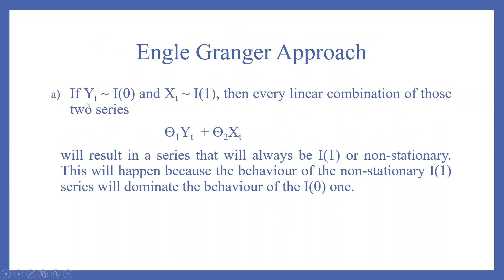The first one, if YT is integrated of the order 0, that is a base, and XT is integrated of the order 1, then every linear combination of those two series, that is theta 1YT plus theta 2XT, will result in a series that will be always I1 or non-stationary. This will happen because the behavior of the non-stationary I1 series will dominate the behavior of the I0, so this will dominate.